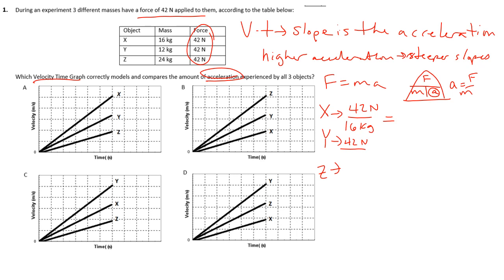For y, we'll have 42 newtons divided by 12 kilograms, and then for z, we'll have 42 newtons divided by 24 kilograms.